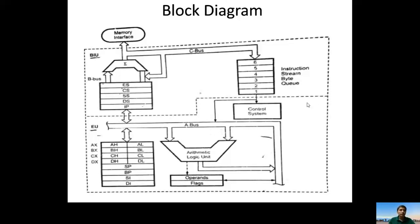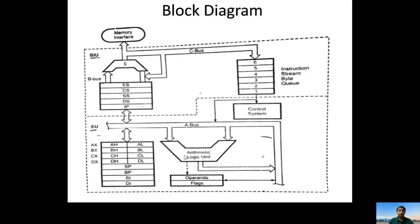The 8086 mainly contains two units: the Bus Interfacing Unit (BIU) and the Execution Unit (EU). The BIU mainly contains a six-byte instruction queue, segment registers, and an adder. The remaining portion is the Execution Unit, which contains the control system, ALU, flags, and some registers.